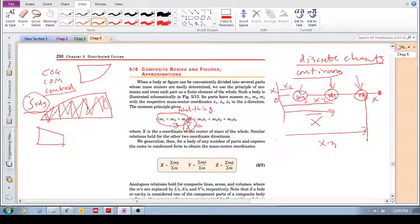So for a body of any number of parts, we then generalize and express the sums in condensed form to obtain the mass center coordinates. So our x̄ is equal to the sum of the moments divided by the total mass, and we do that for ȳ and z̄ as well.